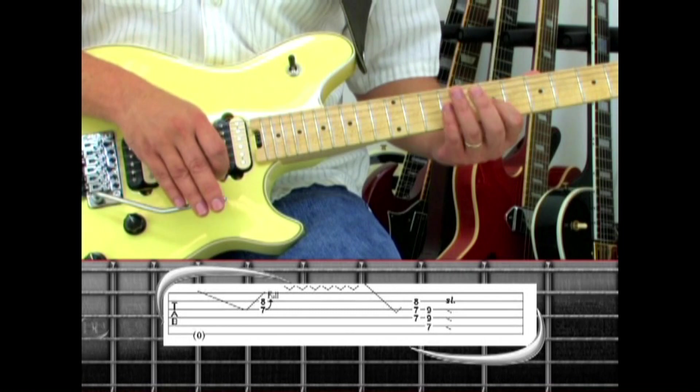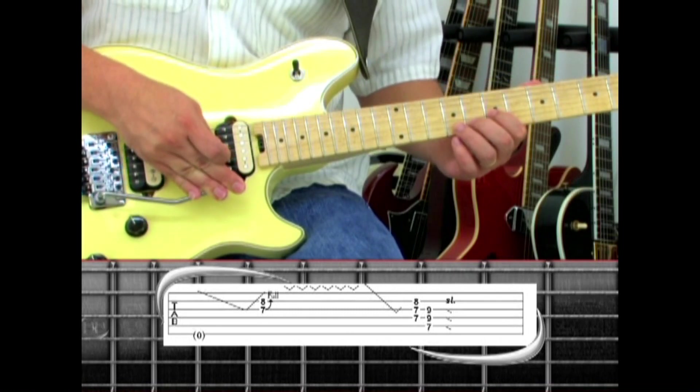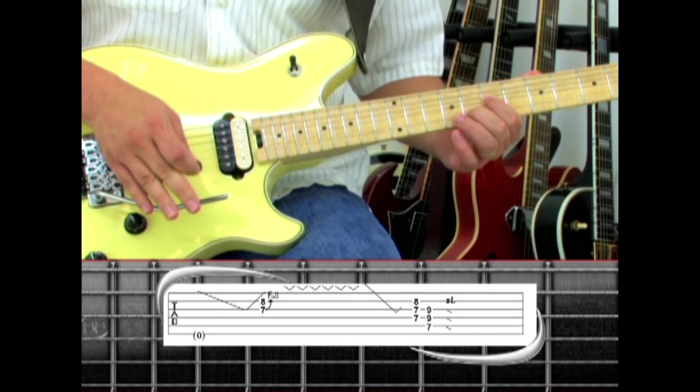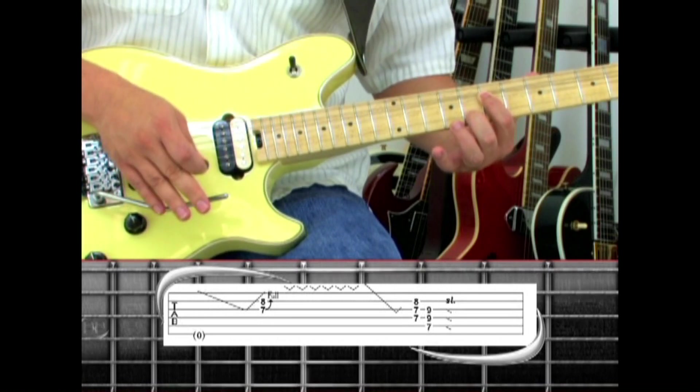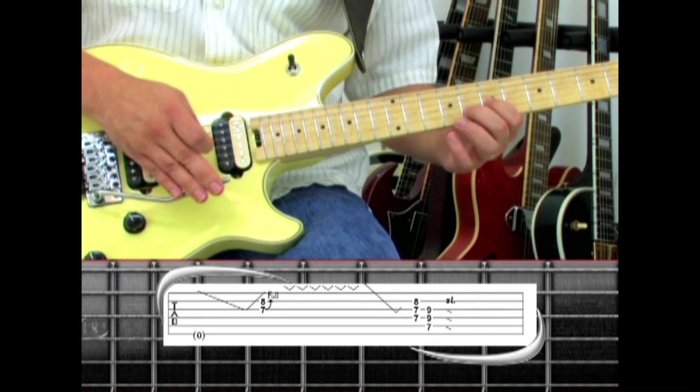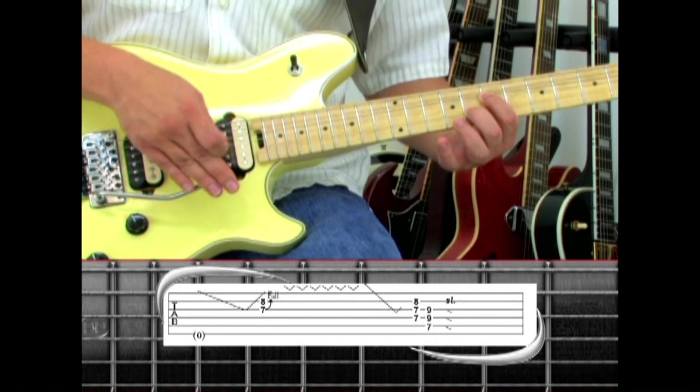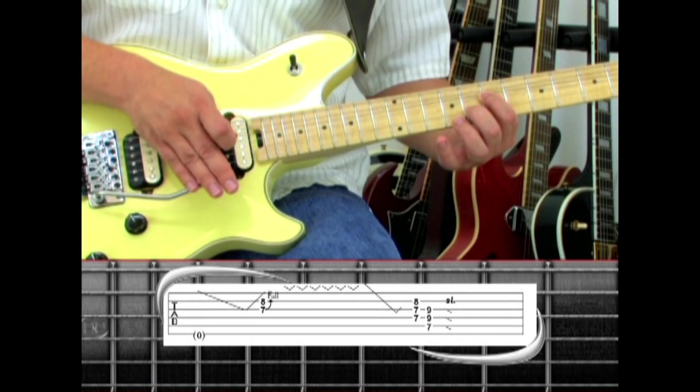While returning the bar, pick strings three and two and bend the third string seven. Hold the bend and dip the bar six times, followed with a long dive.